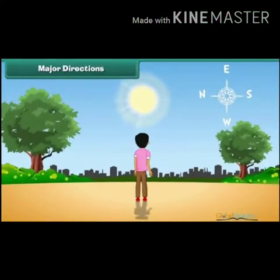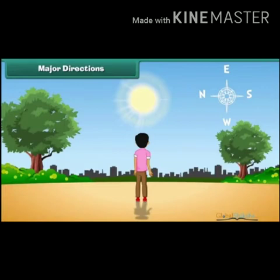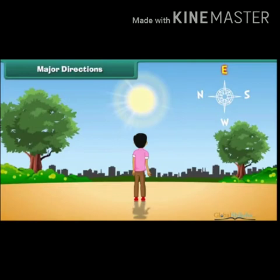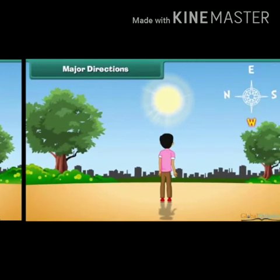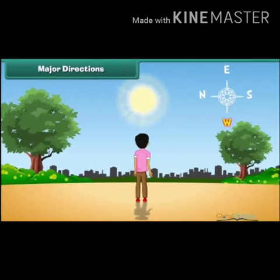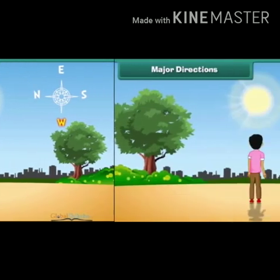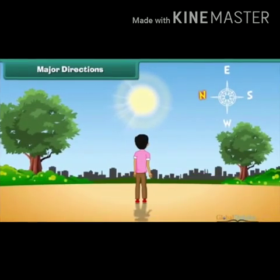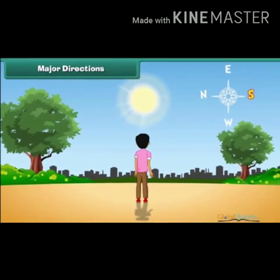I will help you learn directions with the help of a picture. This is Jay. He is standing facing the sun. The sun rises in the East, so East is in front of him. It means West is behind him. North is to his left and South is to his right.